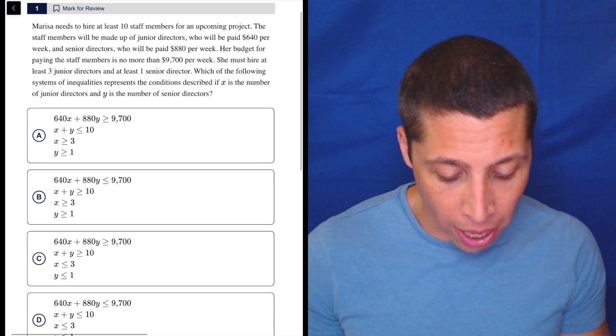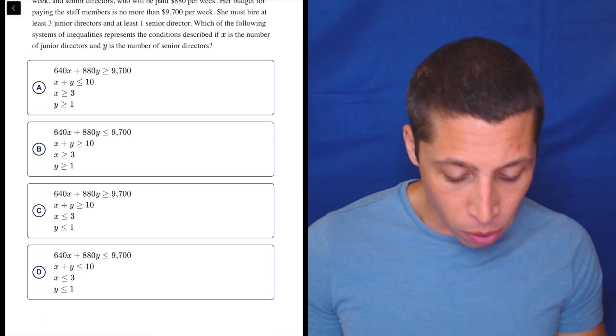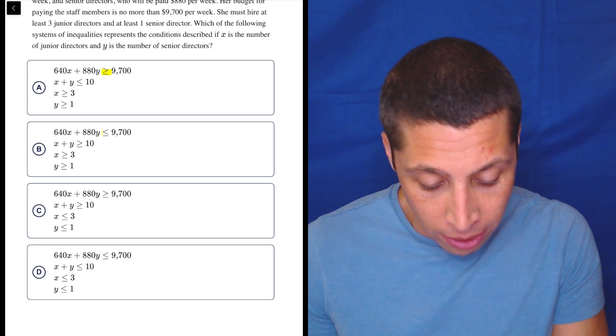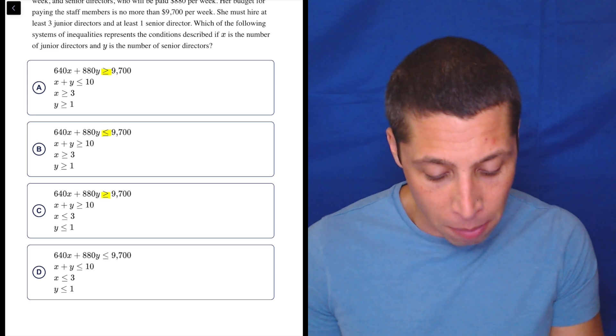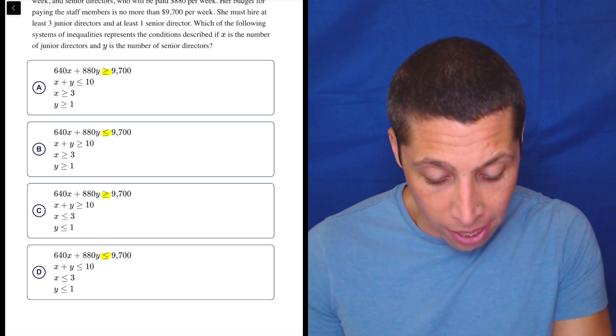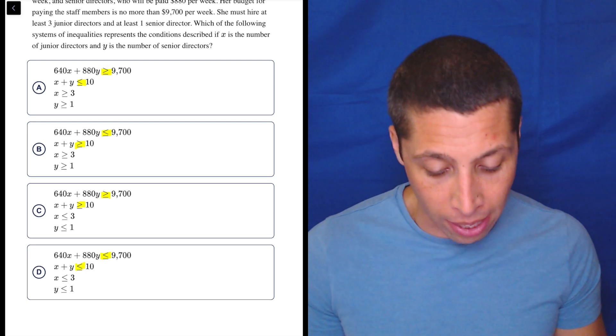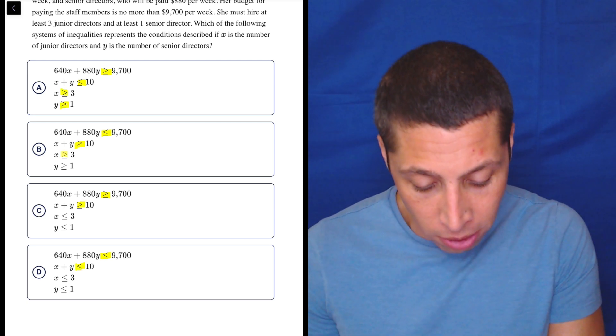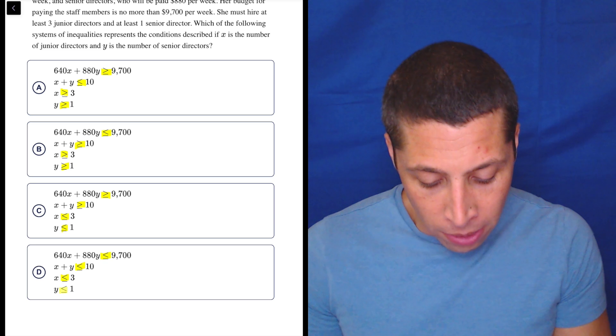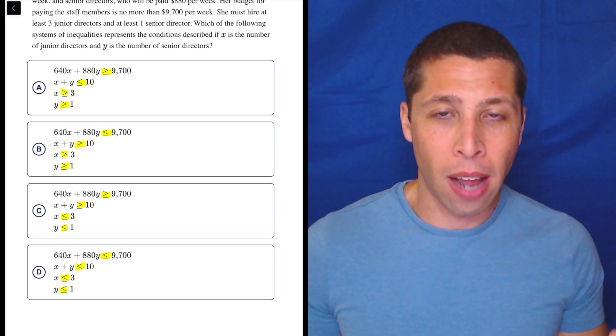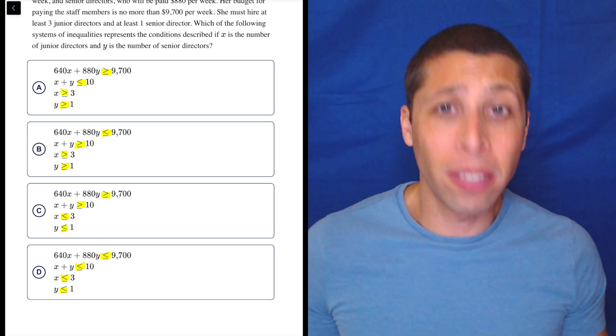So without even reading the passage yet, I'm kind of looking. What's different between them? I see that this 9,700 is going to flip the sign. So maybe that matters. I also see that the 10 right here, right before that, we're changing the sign to different things. And then these ones also are changing the sign. So when I'm reading this, I'm not trying to think, how am I going to build this equation? I'm thinking, what are the inequalities that I'm going to use?